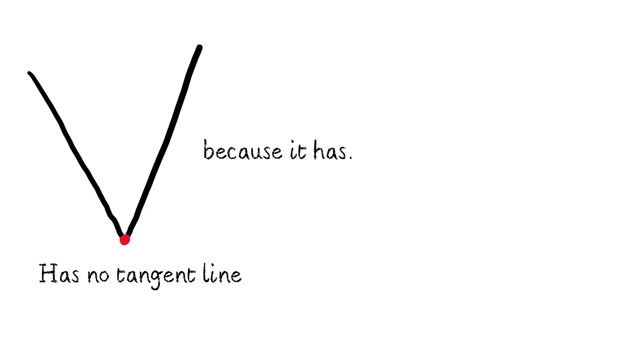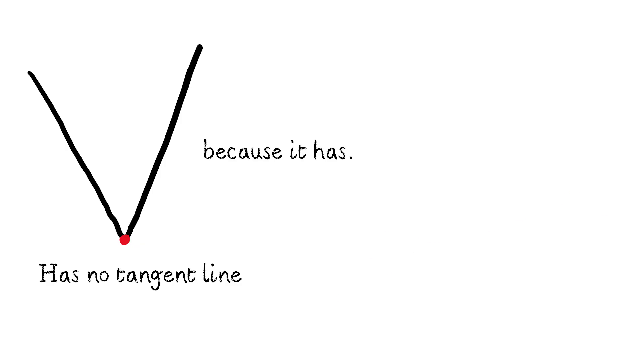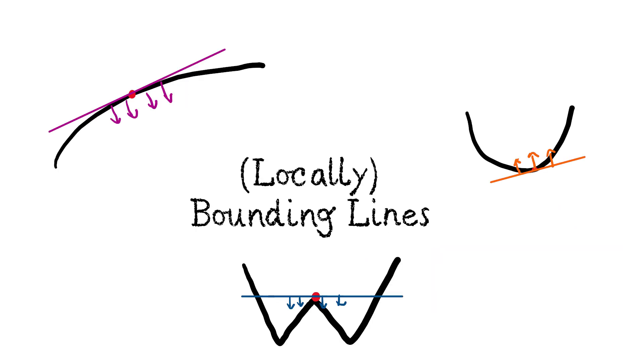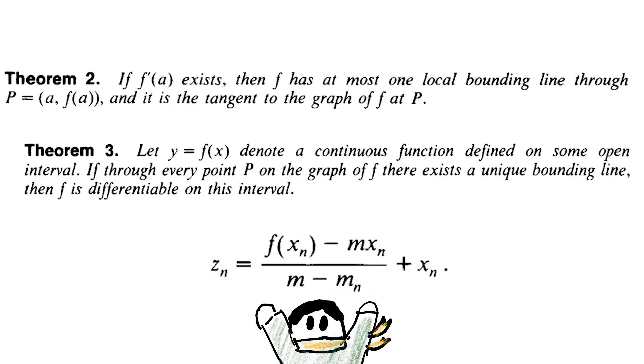He points out a classic error of claiming that the absolute value function has no tangent line at x equal to zero because it has infinitely many tangent lines at x equal to zero, which is just absurd. He instead calls these bounding lines, which is a line for which a function lies entirely on one side. He uses this idea to build tangent lines and eventually connects it to derivatives.